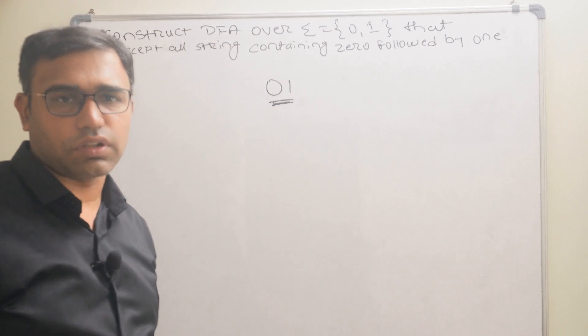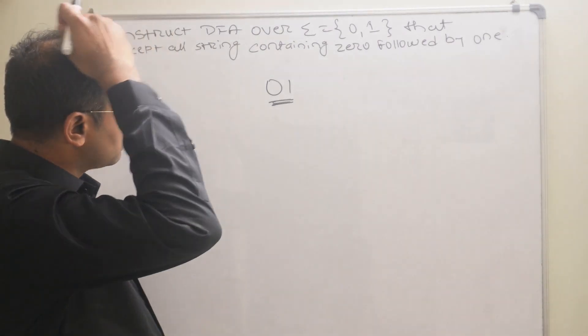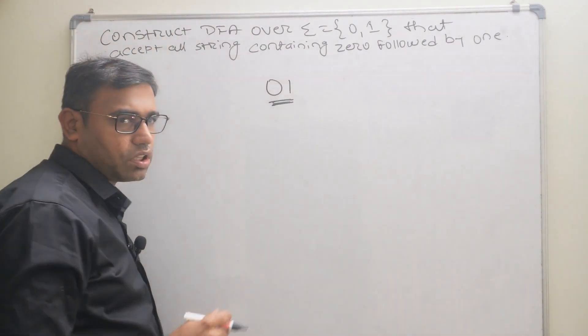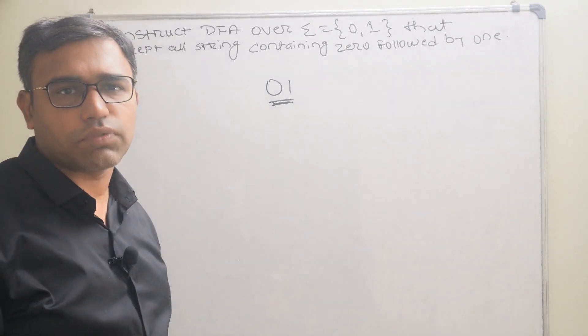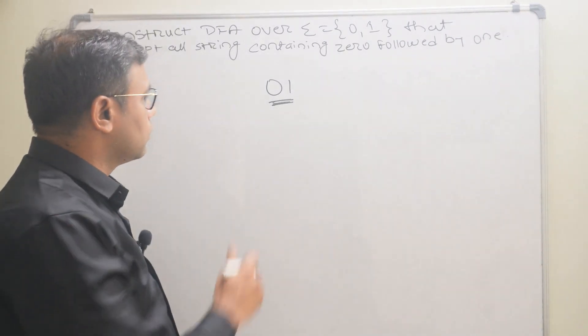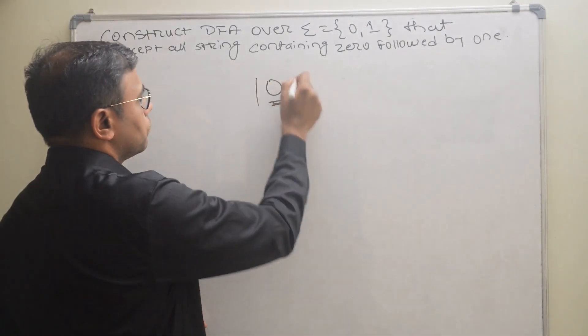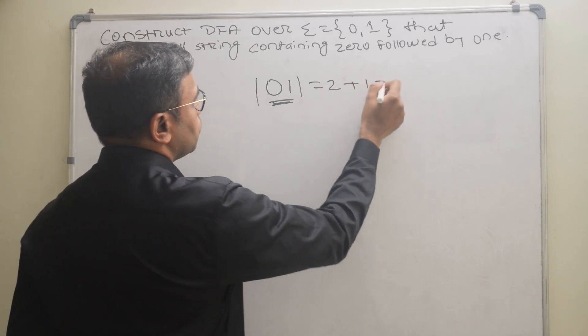All strings should contain zero-one as a substring. I told you that if there is a substring question, then the total number of states will be the length of the string plus one. Here the length of the string is two, so the number of states will be three.